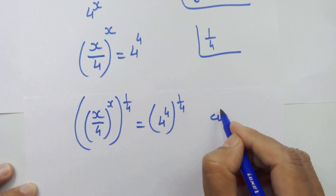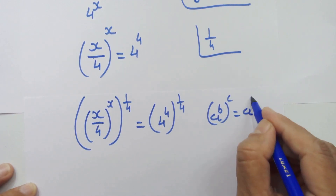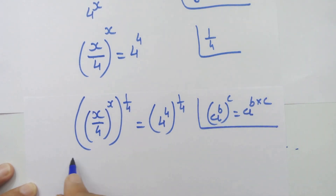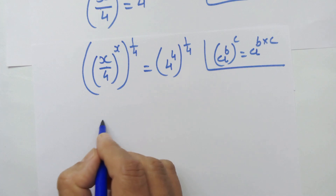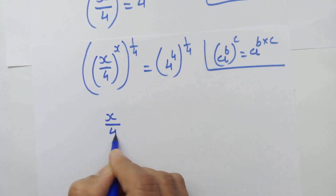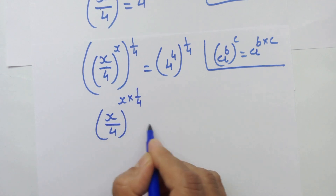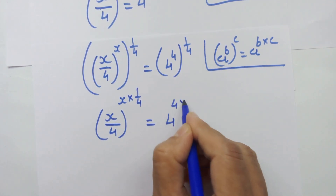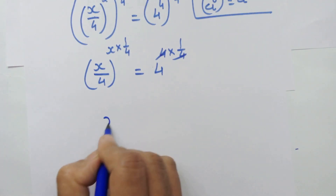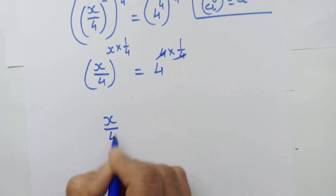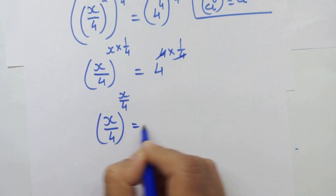Now if we have a raised to b whole raised to c, then we can write it as a raised to b into c. Applying this rule to both sides, x upon 4 whole raised to x into 1 upon 4 is equal to 4 raised to 4 into 1 upon 4. The 4s cancel, so we have x upon 4 whole raised to x upon 4 is equal to 4.